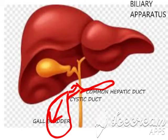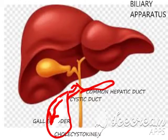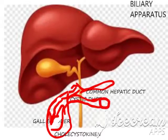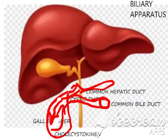Bile comes into the gallbladder and after some time it decides to leave. The hormone responsible for releasing bile from the gallbladder is cholecystokinin. It squeezes all the bile from the gallbladder, which goes through the cystic duct and then enters into the common bile duct, which is the last part of the bile pathway. The common bile duct takes the bile and finally delivers it to the GI tract.